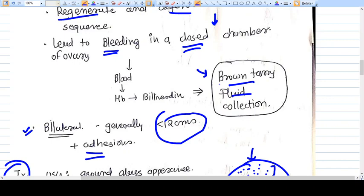If we see the chocolate cyst, the fluid in that is brown tarry fluid. That is nothing but converted collected blood.